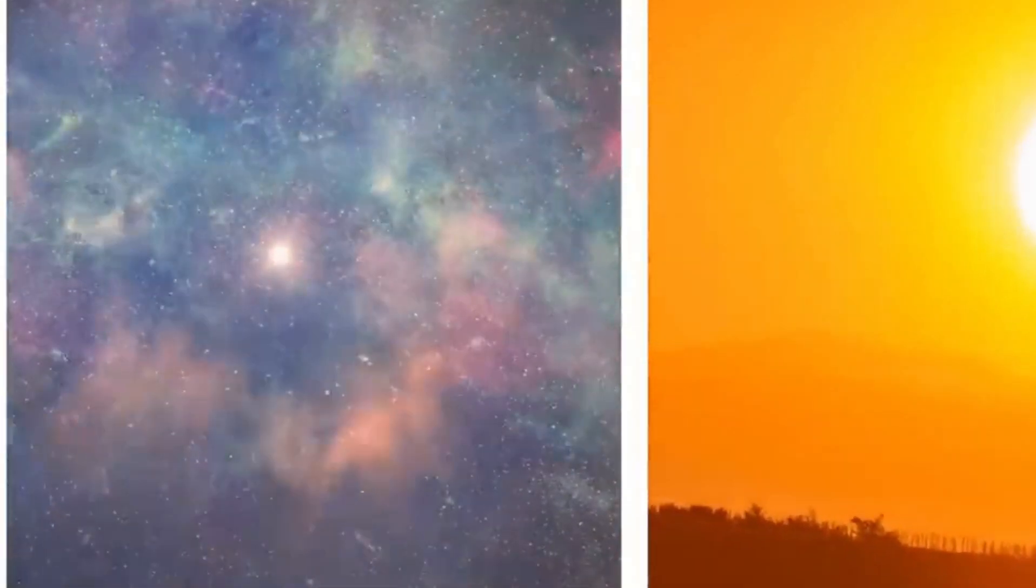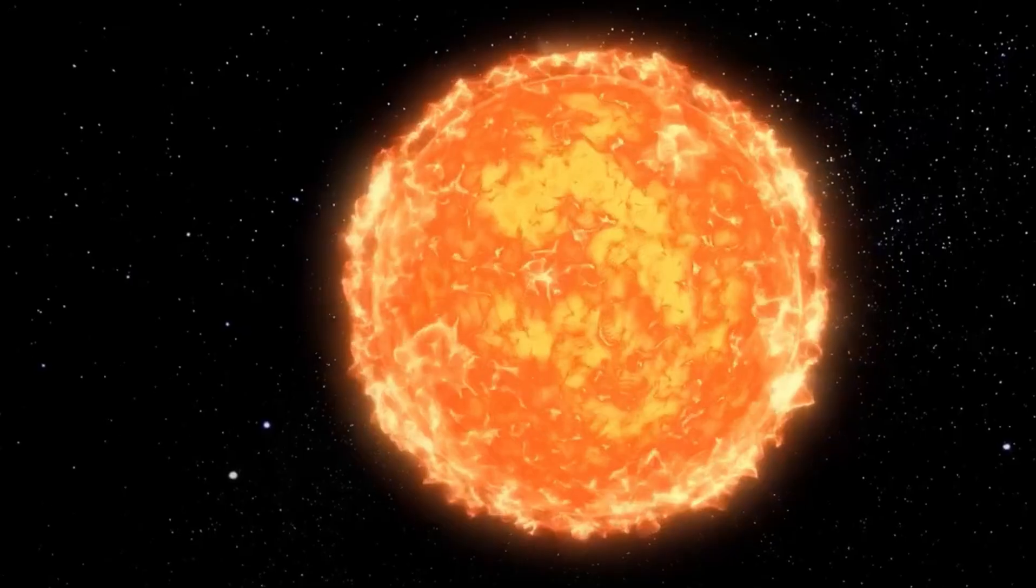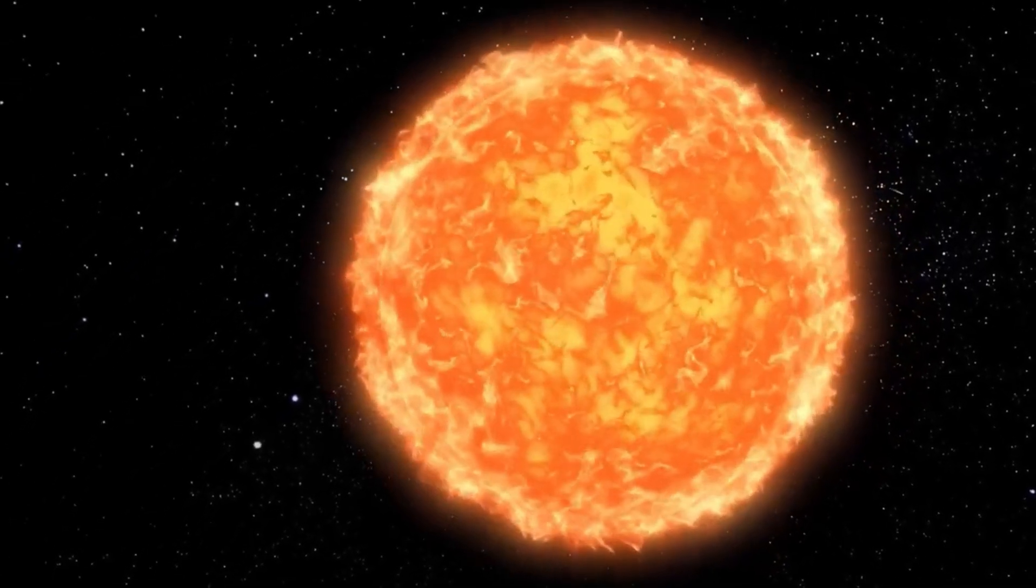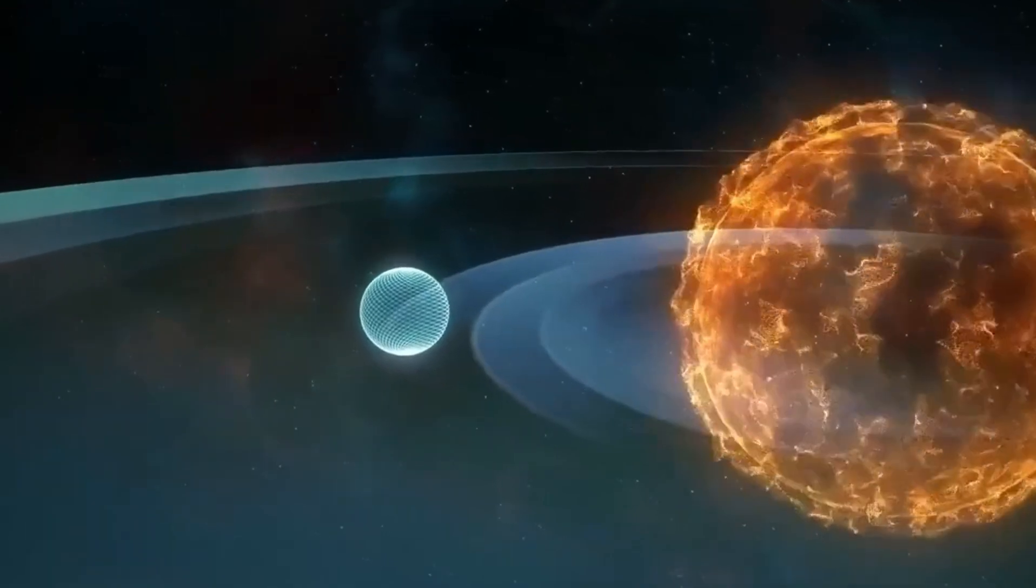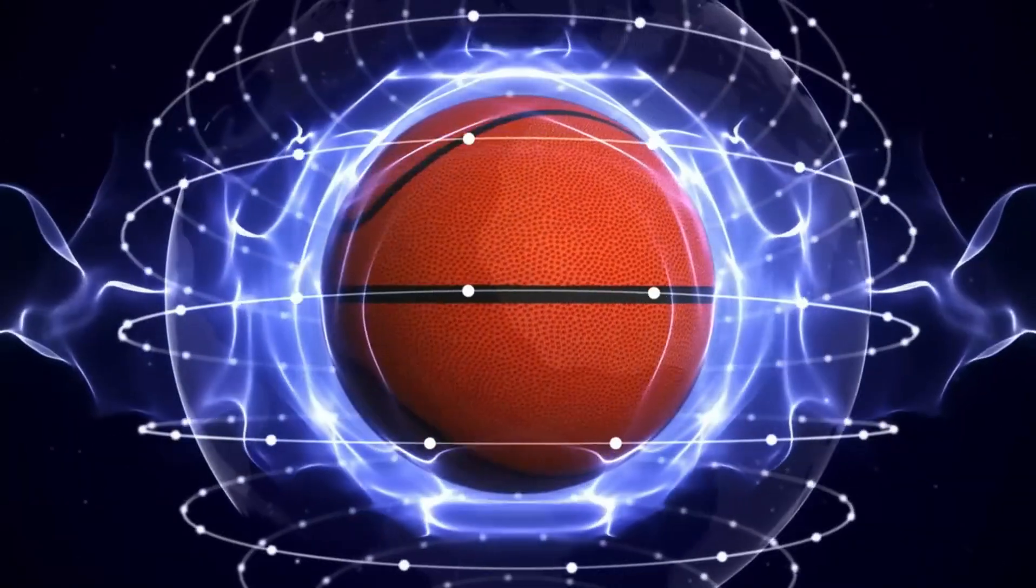Betelgeuse is believed to be merely 10 million years old, a mere fraction of our sun's age and making it 50 times younger. Despite its youth, Betelgeuse has already depleted the hydrogen fuel in its core, finding itself in the latter stages of its existence and transitioning into the red giant phase.